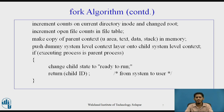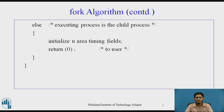If the executing process is a parent process, the child state is changed to ready-to-run and the child ID is returned from the system to the user. Otherwise, it is concluded that the executing process is the child process. Then it initializes the u-area timing fields, returns 0 to the user, and the algorithm terminates.